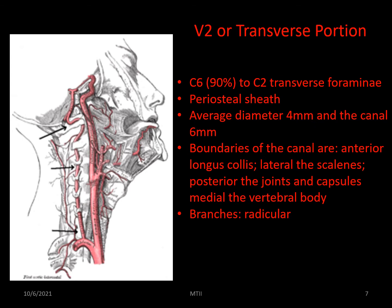V2, or the transverse portion, runs up the transverse tunnel from C6 — 90% or more of the time — to the transverse foramen of C2, where it becomes V3. It takes up between 8 to 85% of the space in the transverse tunnel, which averages 6 mm in diameter. The transverse tunnel is formed anteriorly by the transverse foramen, anteriorly by the longus colli, posteriorly by the zygapophyseal joints and their capsules, laterally by the scalenes, and medially by the vertebral body and the uncovertebral joint. It is also unsheathed in periosteum to protect and stiffen it.